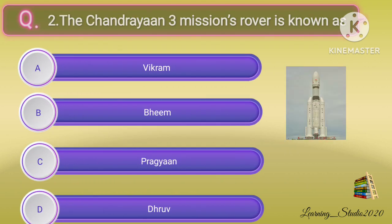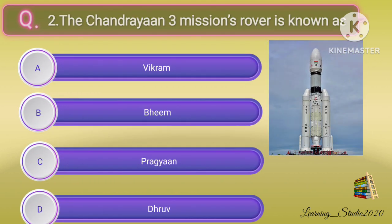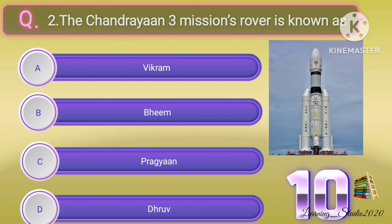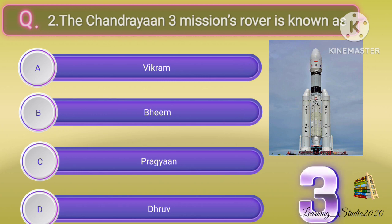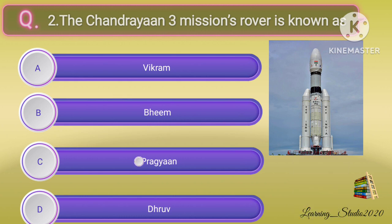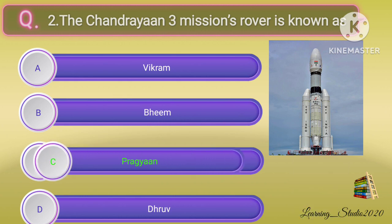The Chandrayaan 3 mission's rover is known as? Correct answer: option C, Pragyaan.